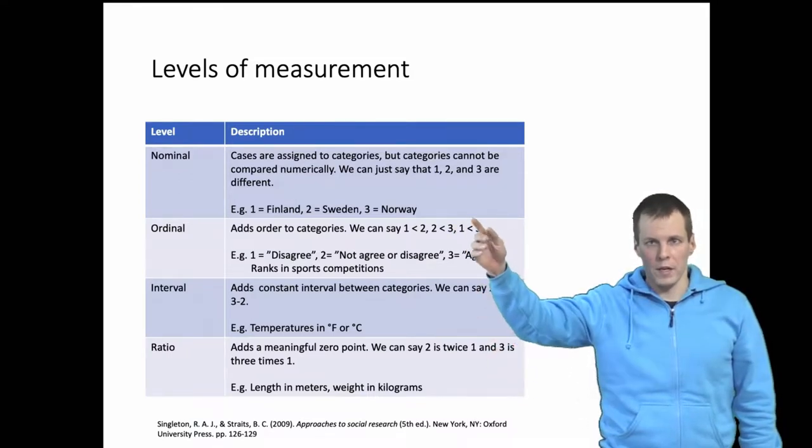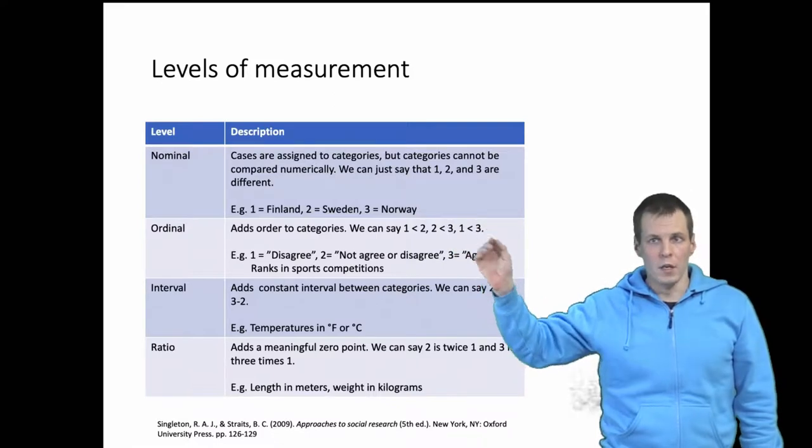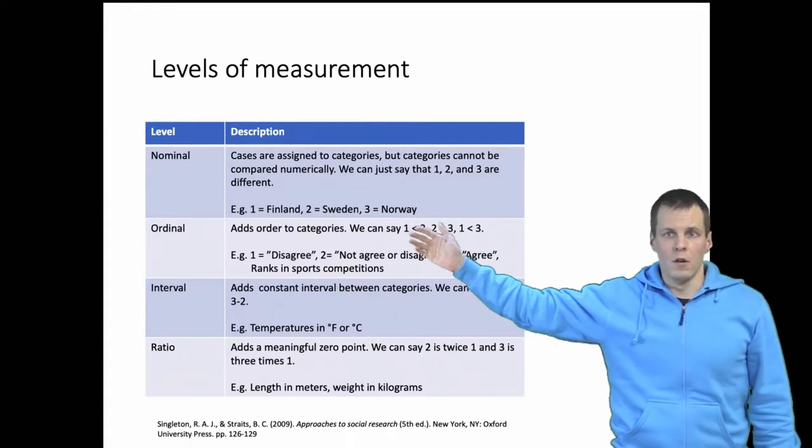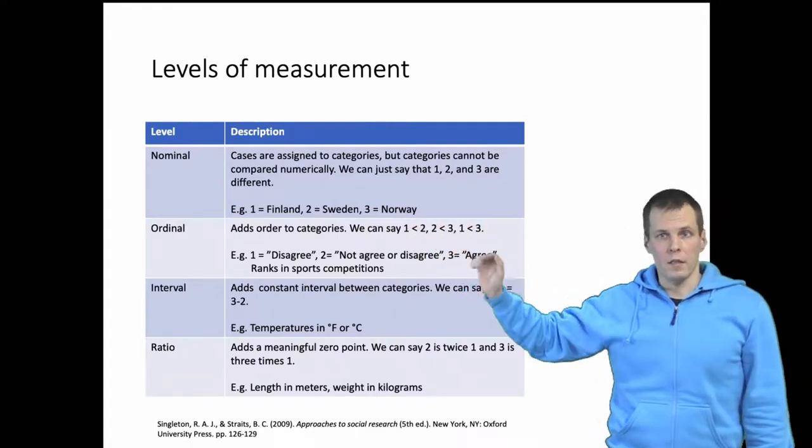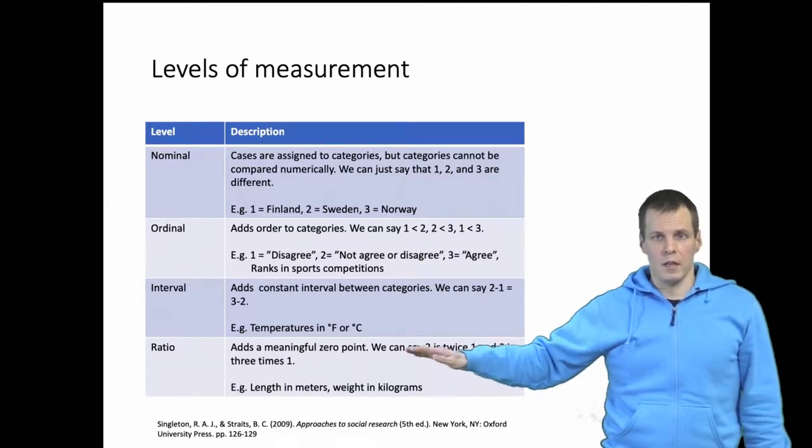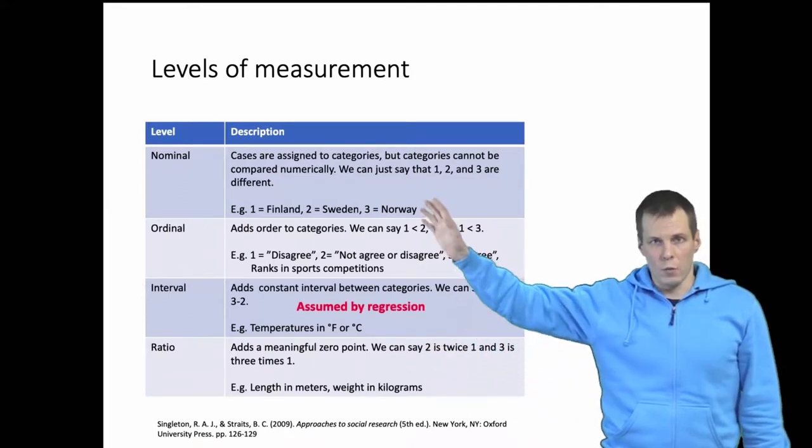For example, Finland, Sweden, and Norway coded as 1, 2, and 3 would be nominal because there is no order. You can't say that Finland is more than Sweden or Norway is more than Sweden. Regression analysis normally assumes at least interval scale, and now we look at the nominal scale.